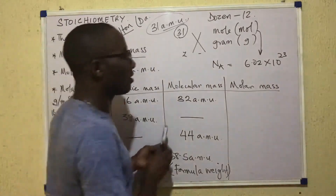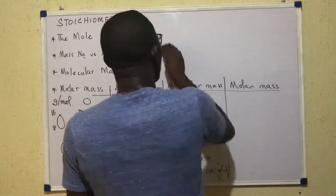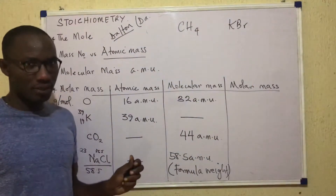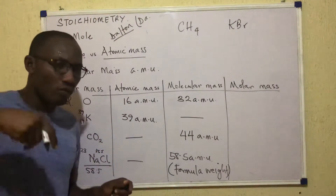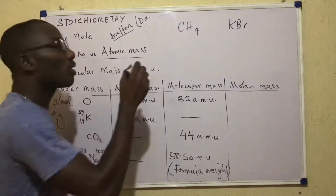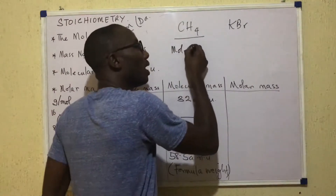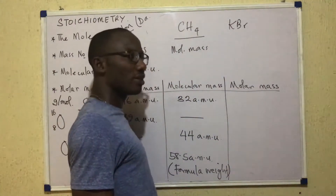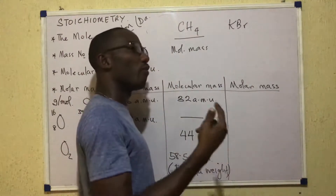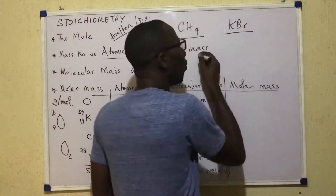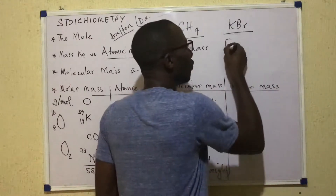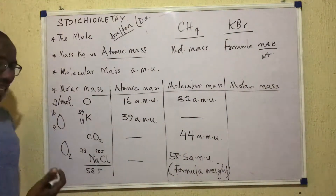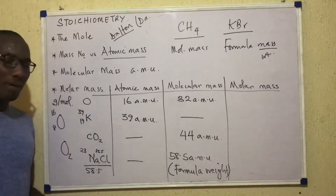Look at CH₄ and KBr — both are compounds, but only CH₄ is a molecule by virtue of its covalent bonding. That is methane. Because methane is a molecule, it will have molecular mass. But KBr is not a molecule — it is electrovalent. So it would be a formula unit, and its mass would be called formula mass or formula weight. So formula weight is to electrovalent compounds as molecular mass is to covalent compounds.